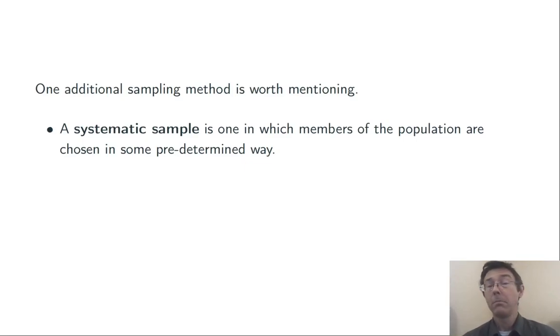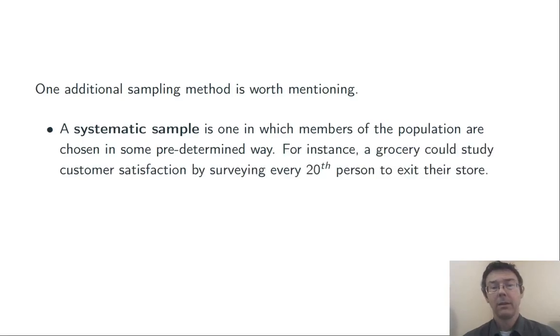With a systematic sample, members of the population are chosen in some predetermined way. For instance, a grocery store could study customer satisfaction by surveying every 20th person to exit their store.